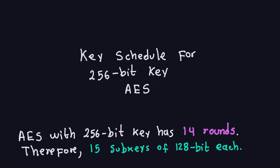This is going to be a little bit similar to what we have done, with a little extra function that we need to use to do the key schedule. When we have AES with a 256-bit key, it will have 14 rounds, and because we have 14 rounds it means we're going to need 15 subkeys, each one of them 128-bit. It doesn't matter what the key length of the original key is — all the subkeys will have 128-bit length. We need to generate 15 of them, and the number of subkeys is always equal to the number of rounds plus one.